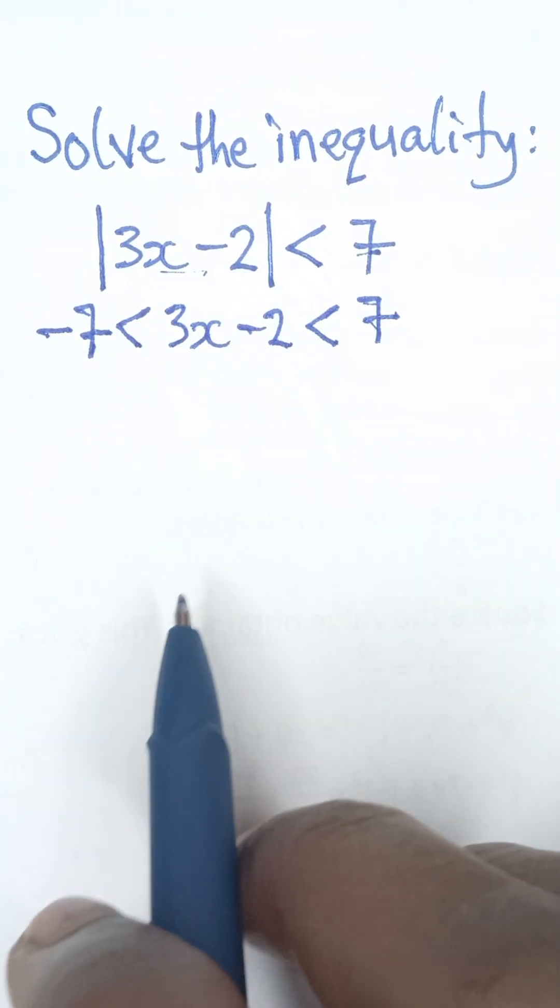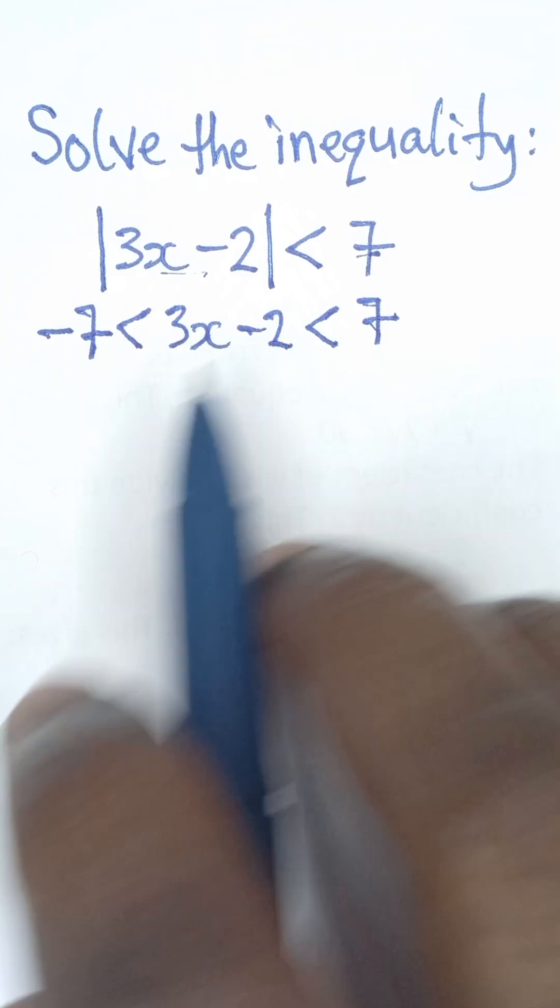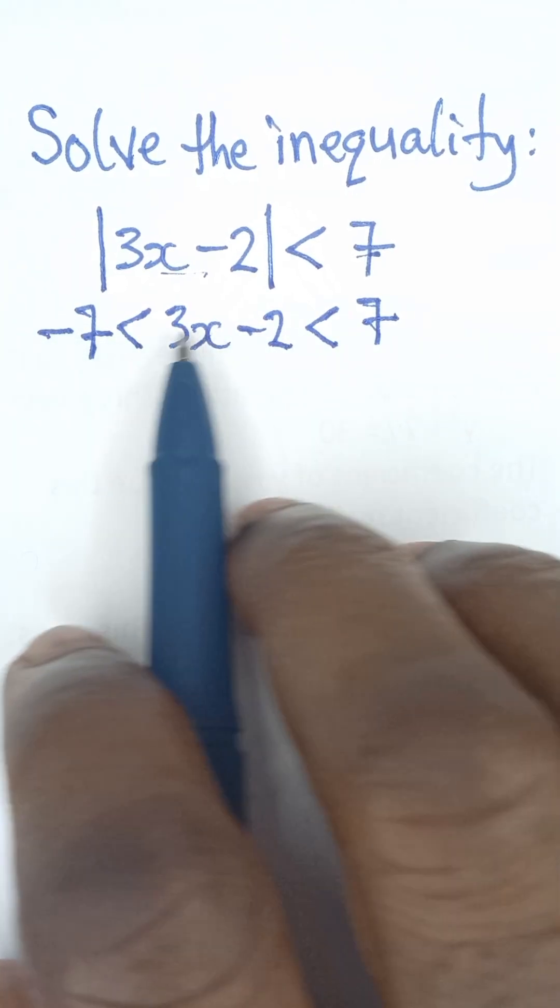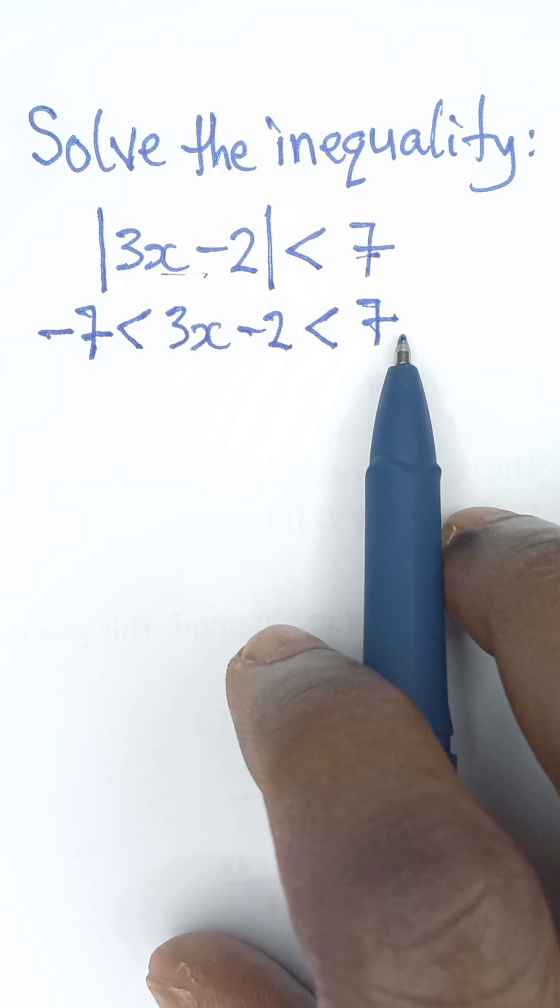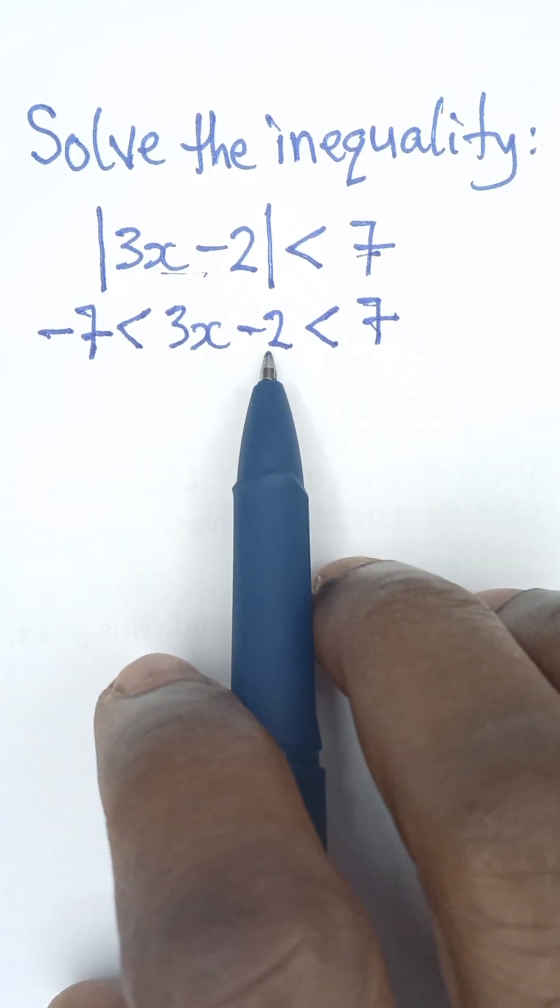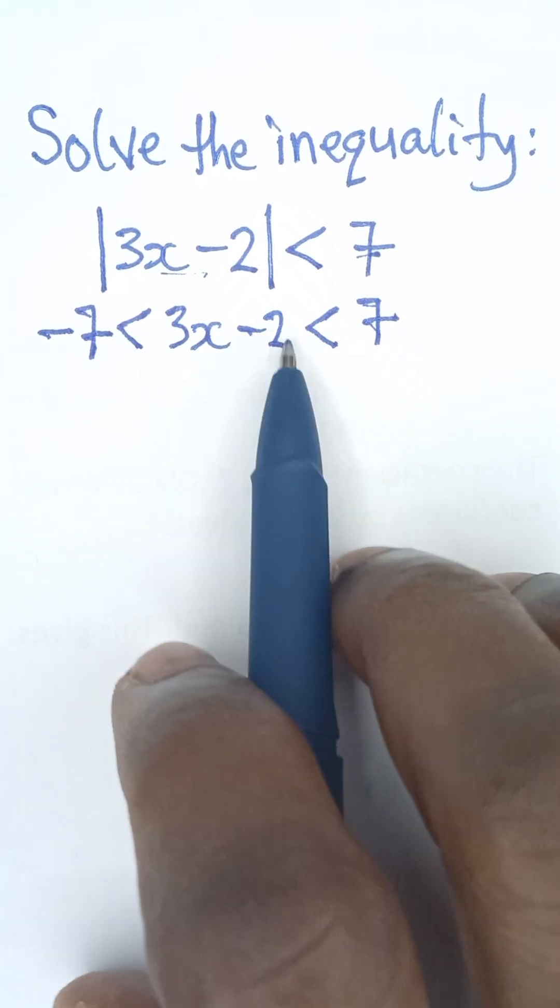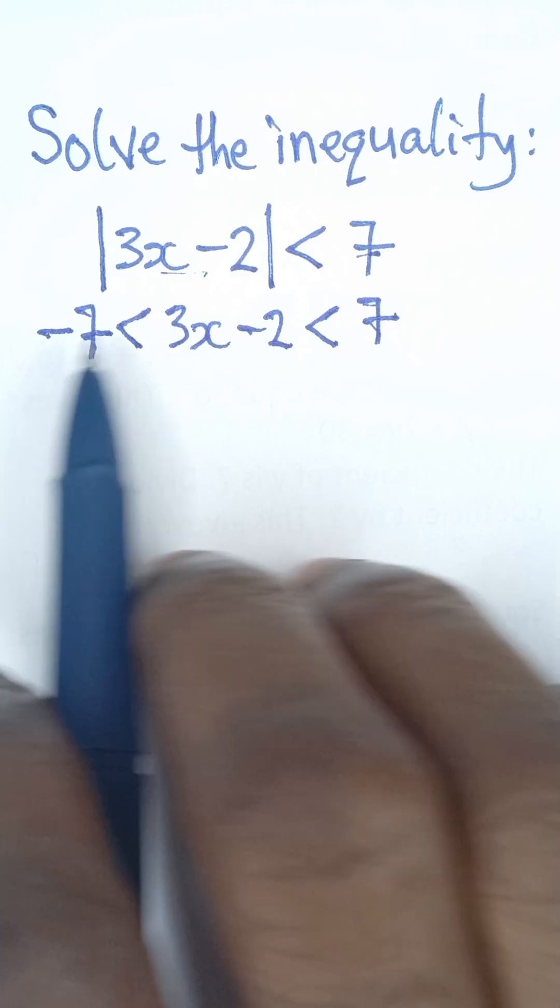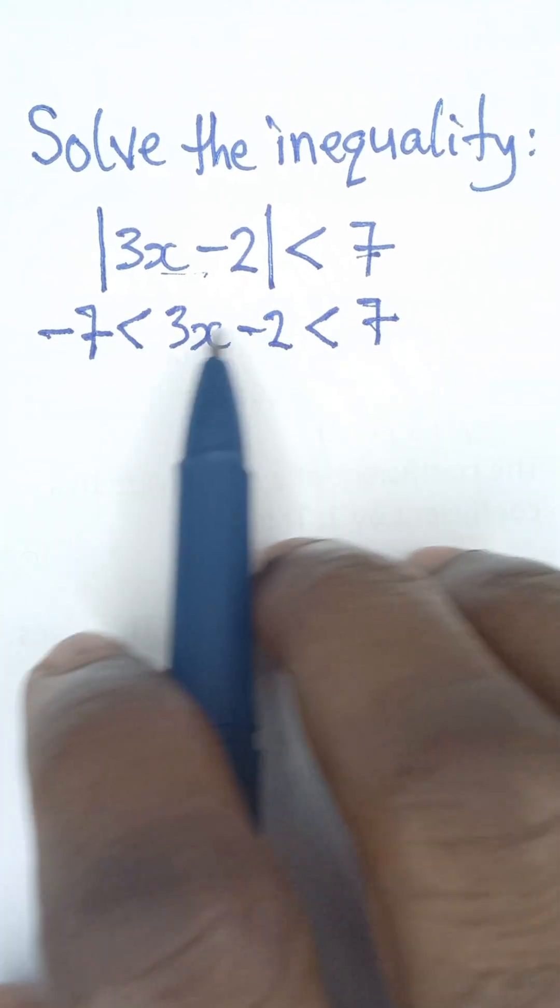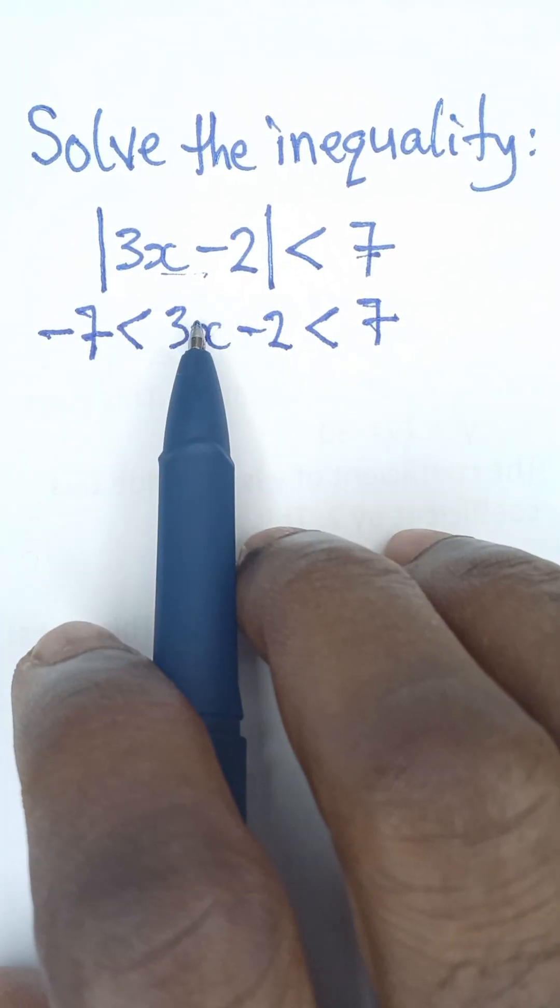Now the next thing for us to do is we can add this positive 2. Don't forget we have three sides: one part, this is the middle part, and the ending part. So we can add 2, because it's negative 2, we add 2 to each side of the equation so that we have only x left here.